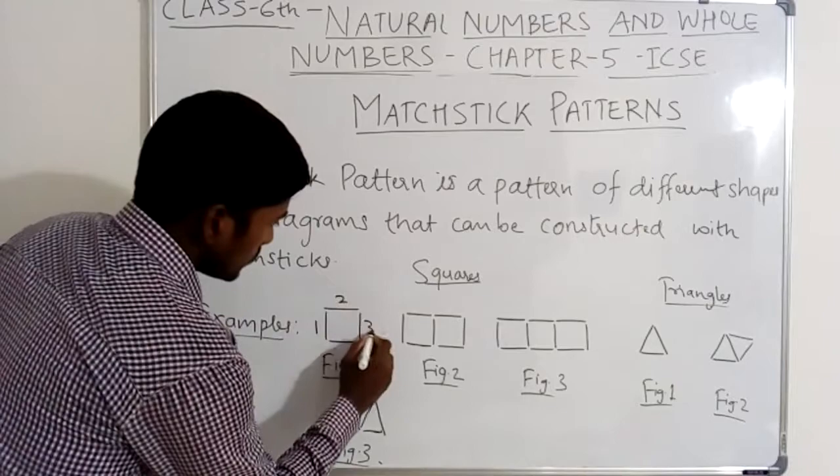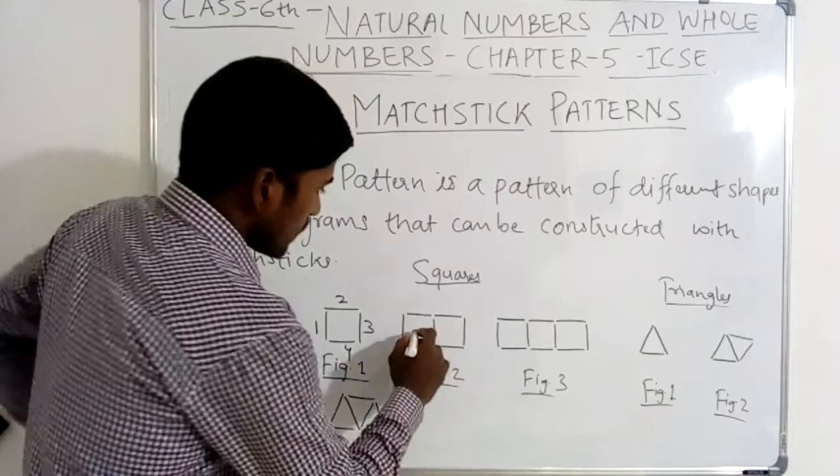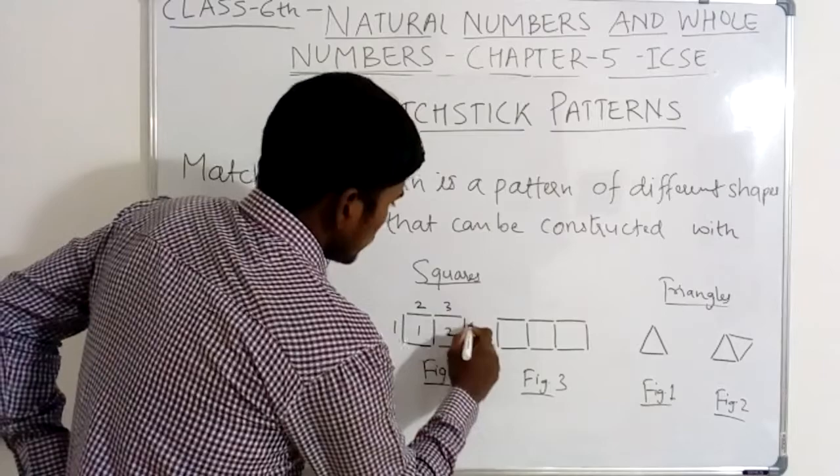Now, in figure 2, here we have two squares — one, two. What number of mastic is used? One, two, three, four, five, six, seven. Seven numbers of mastic are used.